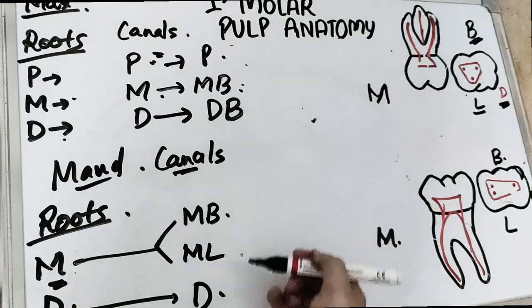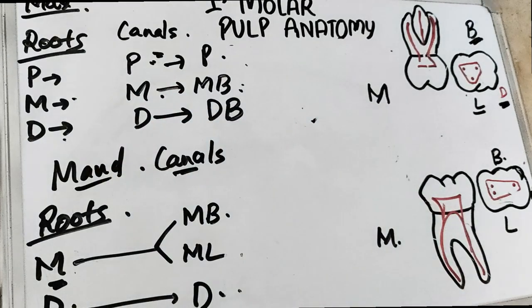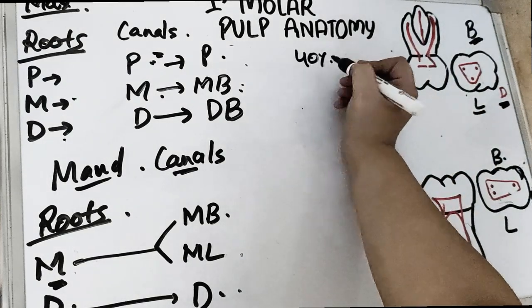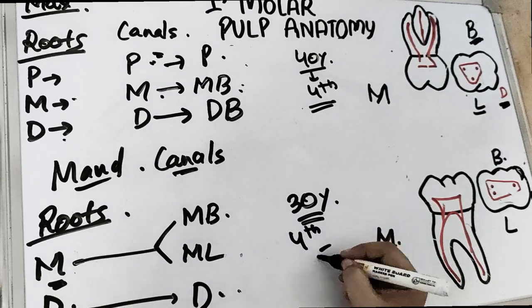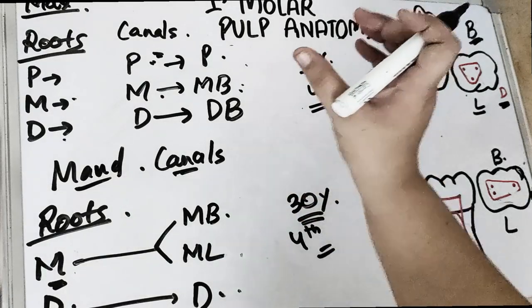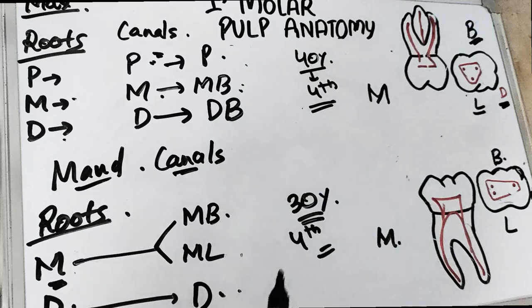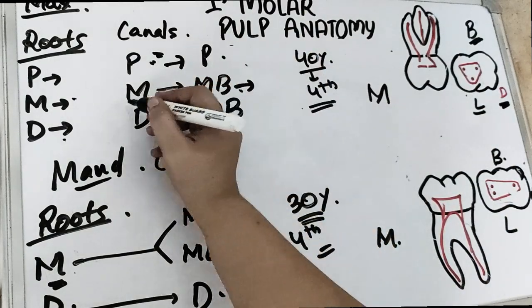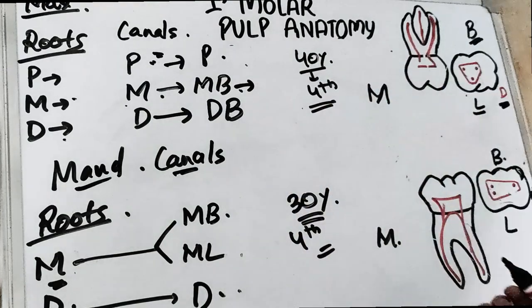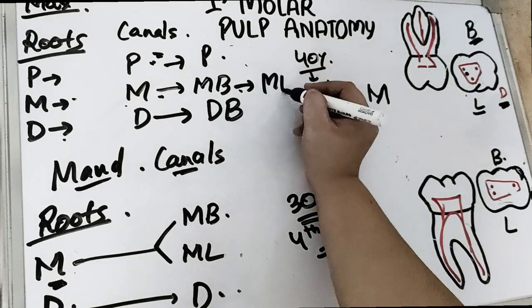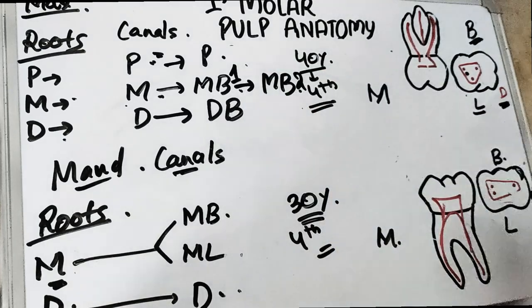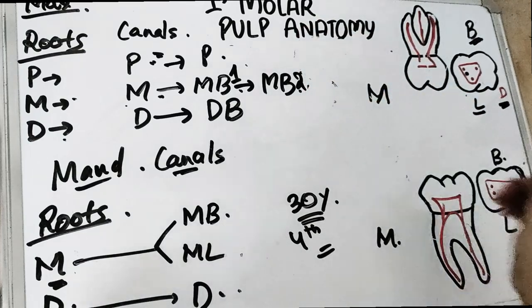Normally three canals are present, but in 40% of cases there is a fourth canal in the maxillary first molar, and in 30% of cases there is a fourth canal in the mandibular first molar. For the maxillary first molar, this fourth canal is located in the mesio-buccal root — behind the mesio-buccal one canal — and is called the MB2 canal.